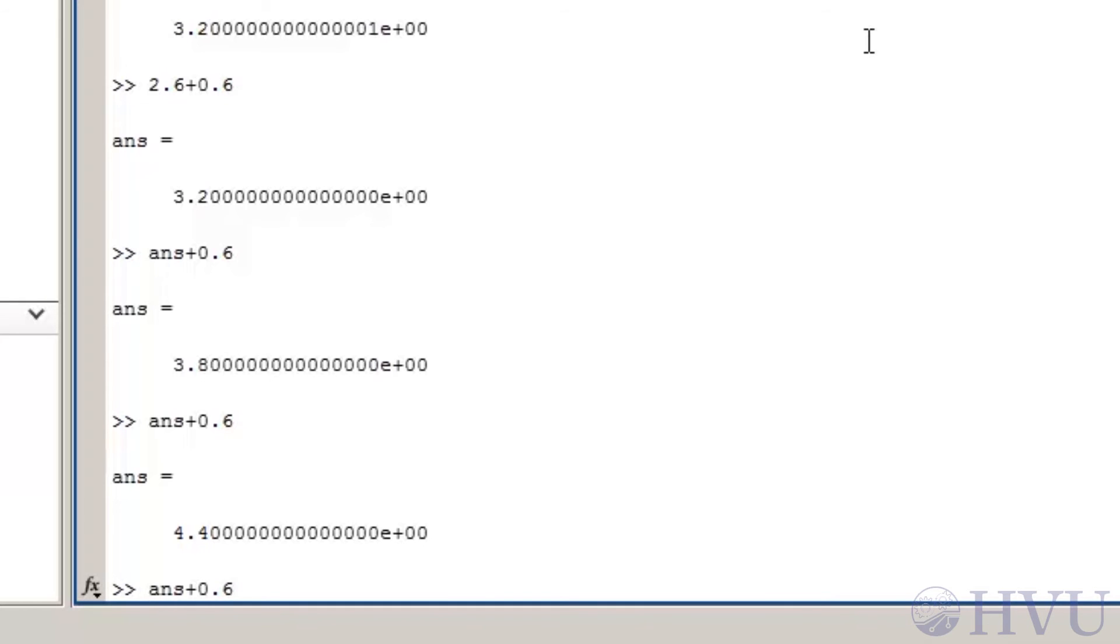And now, if I add 0.6 to that result, I get 5 exactly. Here's another quick example. The square of the square root of 2 should be 2. So, if I multiply the square root of 2 times the square root of 2 and subtract 2 from that, I should get 0.